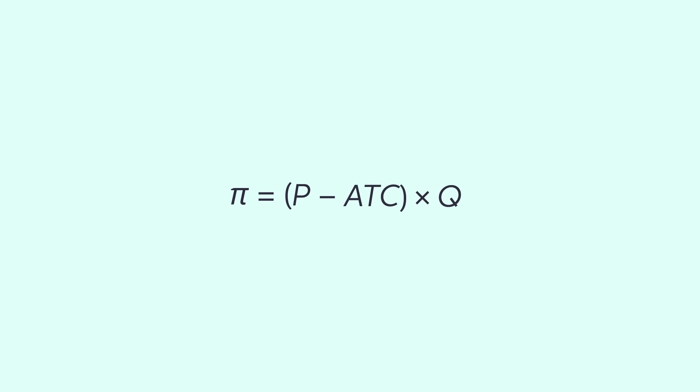Graphically, the profit function is represented by price minus average total cost multiplied by quantity.